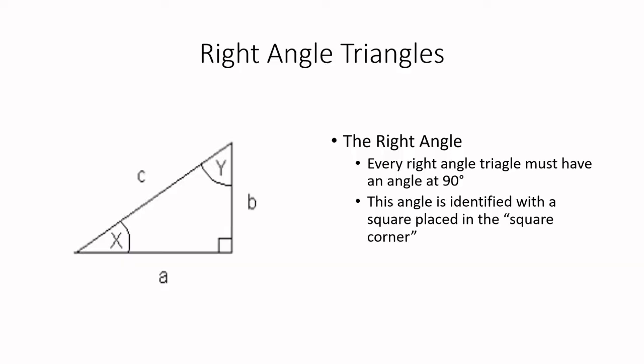So let's figure out what all the different sides and angles of our triangle are called. Because I'm going to be throwing these terms out all the time. And so we better start at the beginning, make sure we're all on the same page. So we understand what we call each side and each angle of the triangle. So as I just indicated, here's the right angle. It's this angle here in the corner with the square.